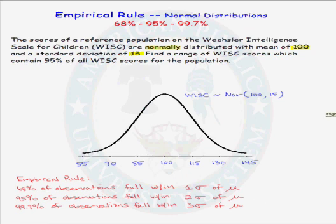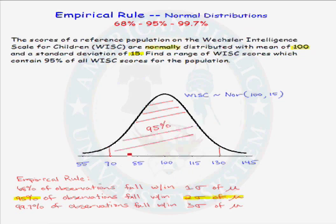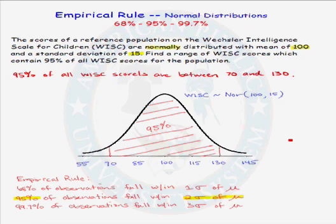We were asked to find a range of WISC scores which contain 95% of all WISC scores. So using the empirical rule, we know that we need to go out two standard deviations in each direction from mu. Two standard deviations above the mean of 100 puts us at 130. Two standard deviations below the mean puts us at 70. So this range contains approximately 95% of all observations on the WISC score, meaning 95% of all WISC scores are between 70 and 130.